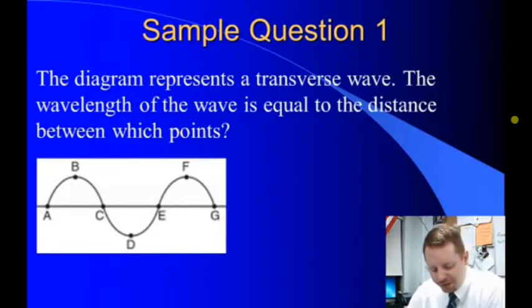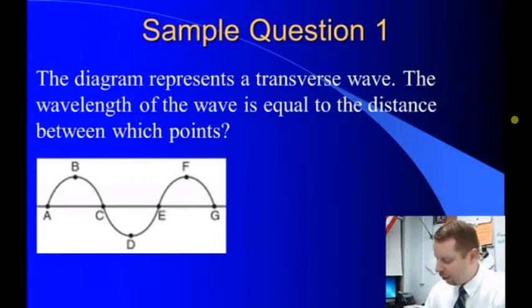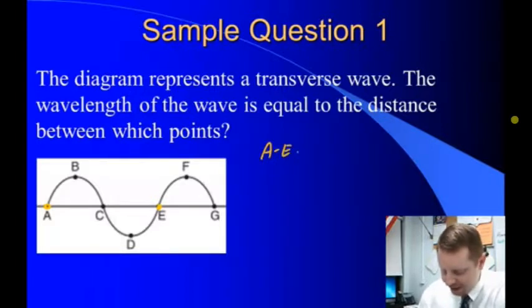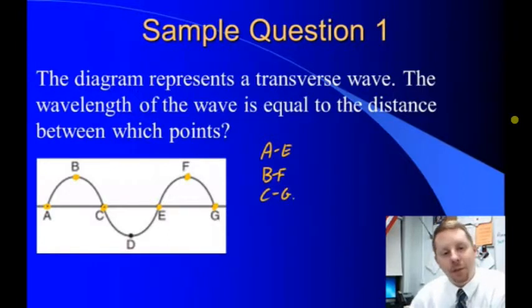So, simple question one. The diagram represents a transverse wave. The wavelength of the wave is equal to the distance between which points? It means we have to find the same point on consecutive waves. If I look at A, I can see the same point over here at E. So the distance between A and E would give us a wavelength. I also see here if we start at B, we have the same point on a consecutive wave there at F. So B and F should work. Or if I start at C, the distance between C and G is the distance between the same point on consecutive waves. So I see three sets of points you could use to determine the wavelength here.